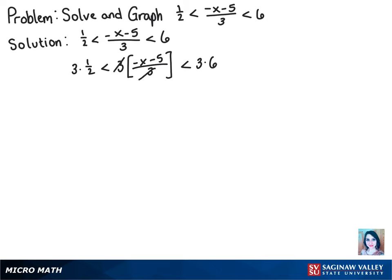That way these 3's cancel. And we get 3/2 is less than negative x minus 5 is less than 18.